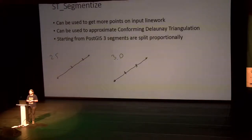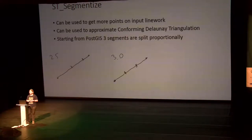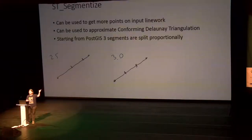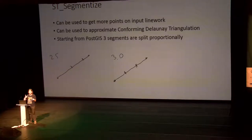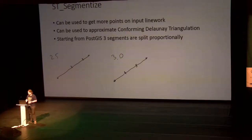The first thing I had to do was fix the ST_Segmentize function. Initially, if you had a super long segment and wanted to split it every 50 meters to generate triangles with a length of 50 meters, you used ST_Segmentize. But if the segment length is not proportional to 50 meters, you get a bunch of 50-meter segments and one smaller one. That doesn't look good — so I fixed that.